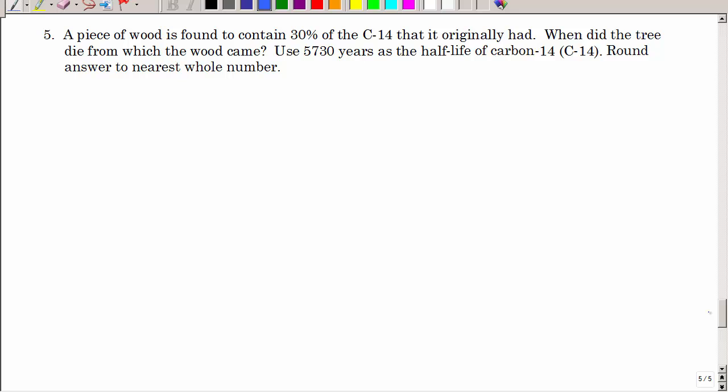Let's look at our last example. Carbon 14 dating is a way to tell how old some things are by measuring the amount of carbon 14 in whatever is dead basically. So we have a piece of wood that's found to contain 30% of the carbon 14 that it originally had. When did the tree die? Well, let's see. We have a half-life of 5,730 years of carbon 14. It didn't tell us what they started out with, right?